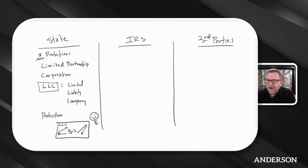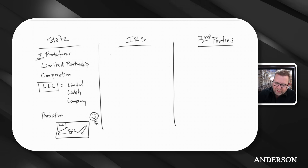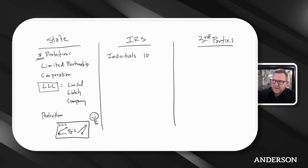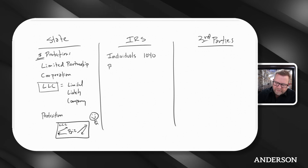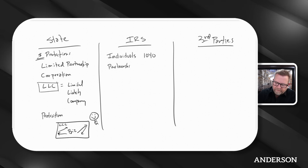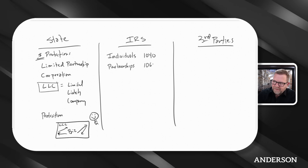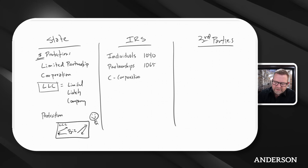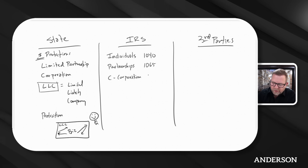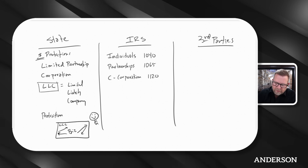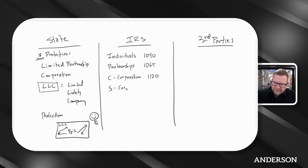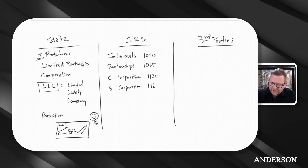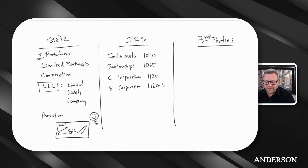From an IRS standpoint, let me go through what our options are. You have individuals filing a 1040, you have partnerships filing a 1065, you have C corporations — this is what all corporations start off as — and they file an 1120. Then you have S corporations, which is when you file a special request to treat it under a different subchapter of the Internal Revenue Code. That's why they call them S — they're subchapter S.